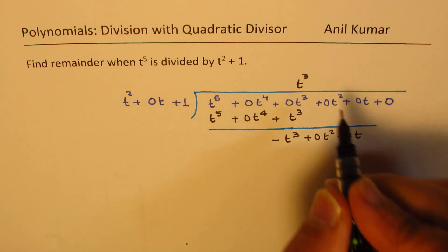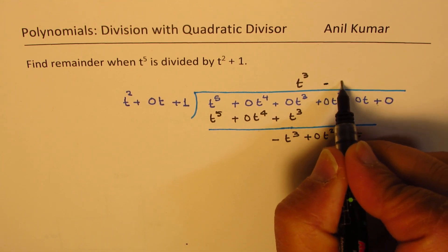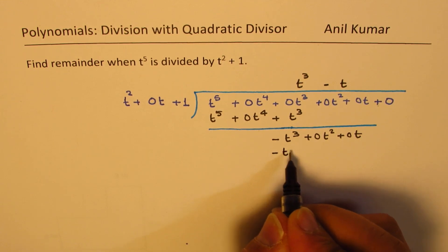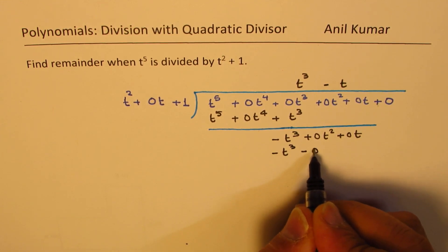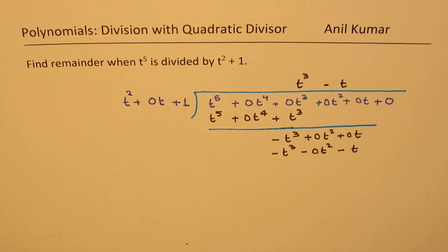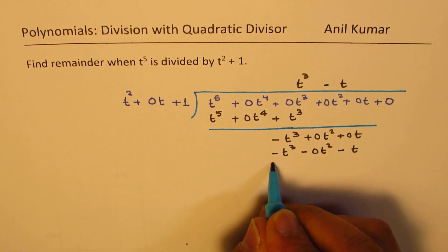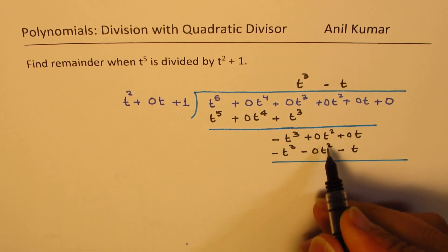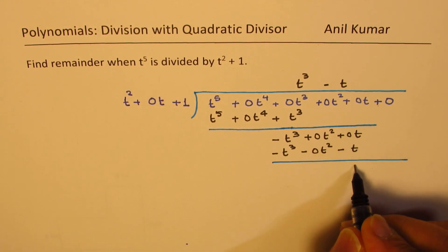Now, minus t cube means I need to multiply by minus t. So when I do that, I get minus t cube here minus 0t square minus t. Now if I take it away, what are we left with? That is 0, this is 0, and here we are left with t.